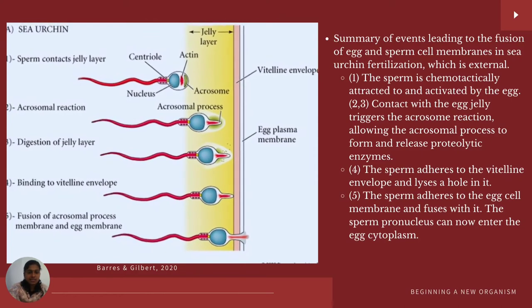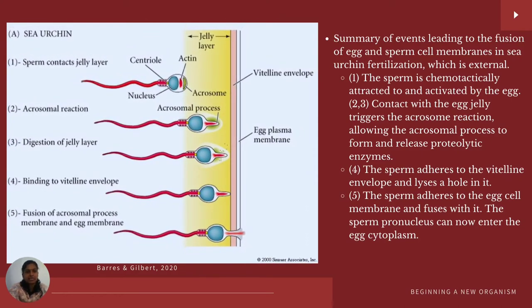This picture summarizes the events leading to egg and sperm cell membrane fusion in sea urchin fertilization. Step one: the sperm is chemotactically attracted and activated toward the egg. Steps two and three: contact with the egg jelly triggers the acrosome reaction, allowing the acrosomal process to form and release its proteolytic enzymes. Step four: the sperm adheres to the vitelline envelope and lyses a hole in it. Step five: the sperm adheres to the egg cell membrane and fuses with it, and the sperm pronucleus enters the egg cytoplasm through the acrosomal process.